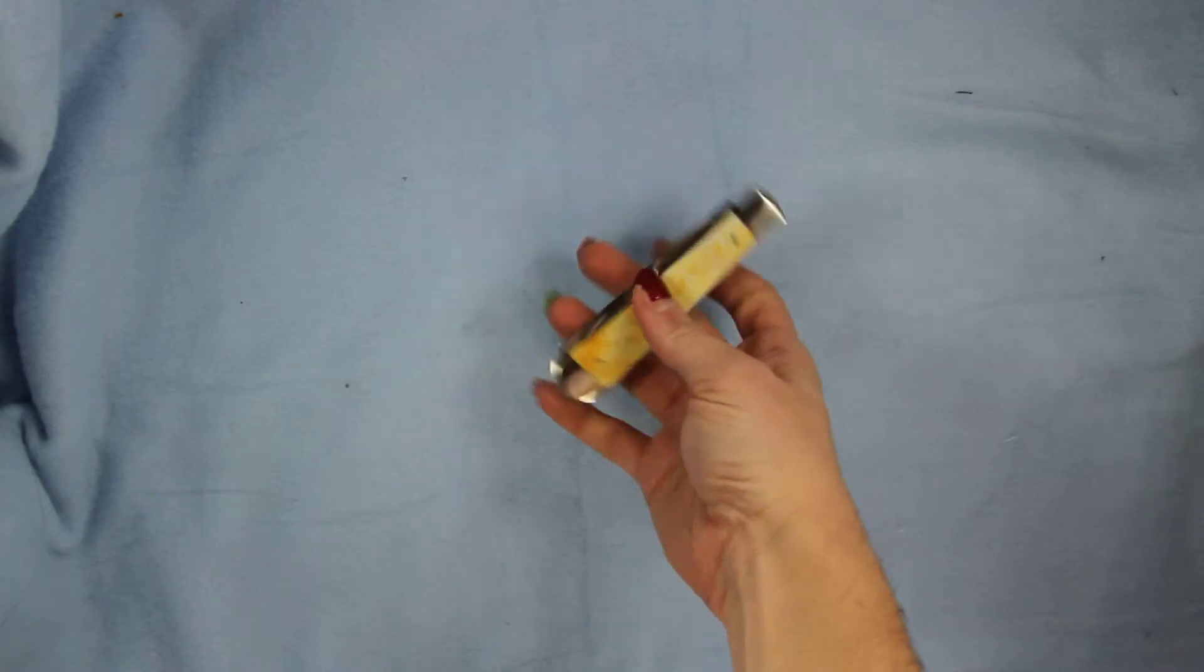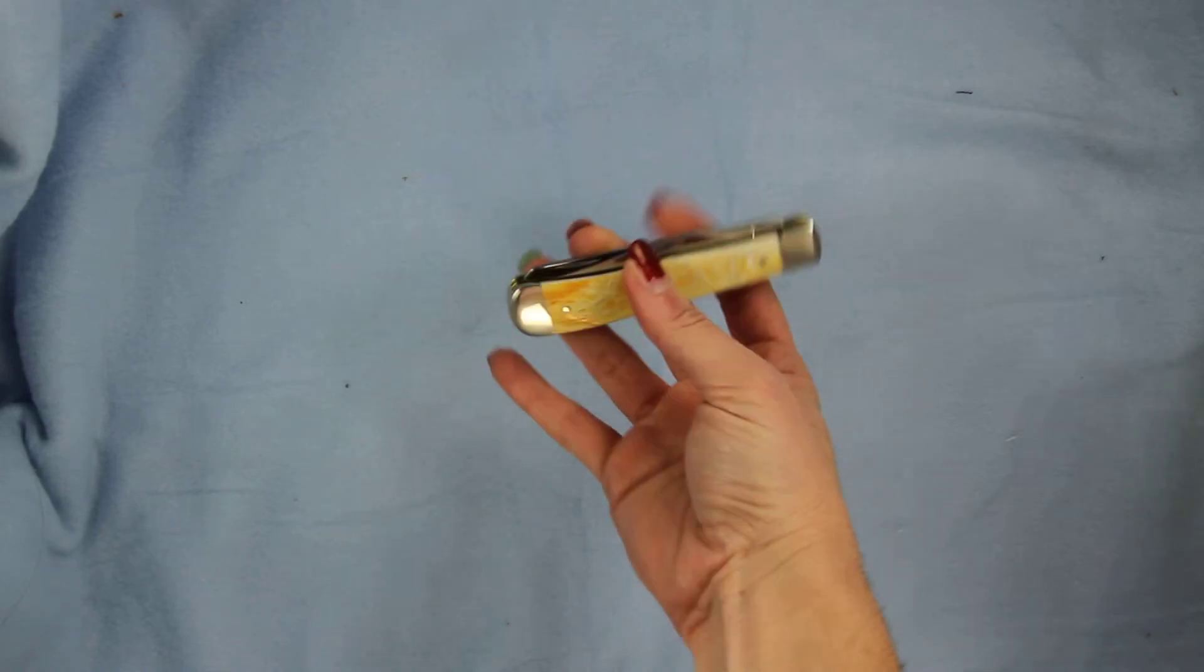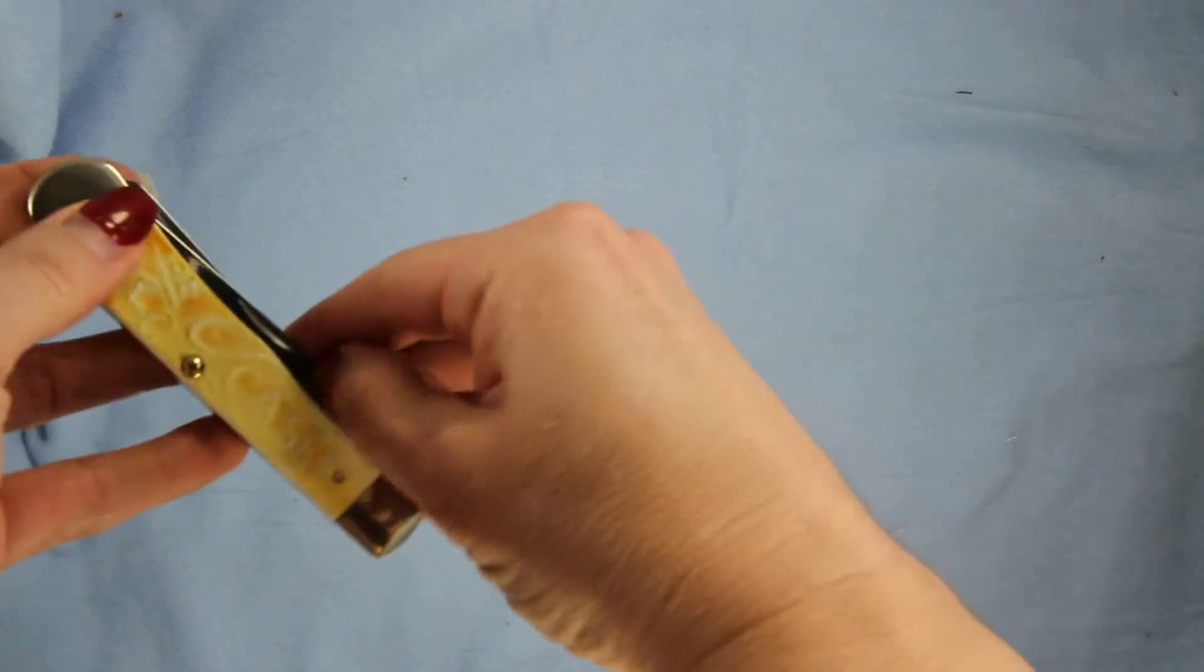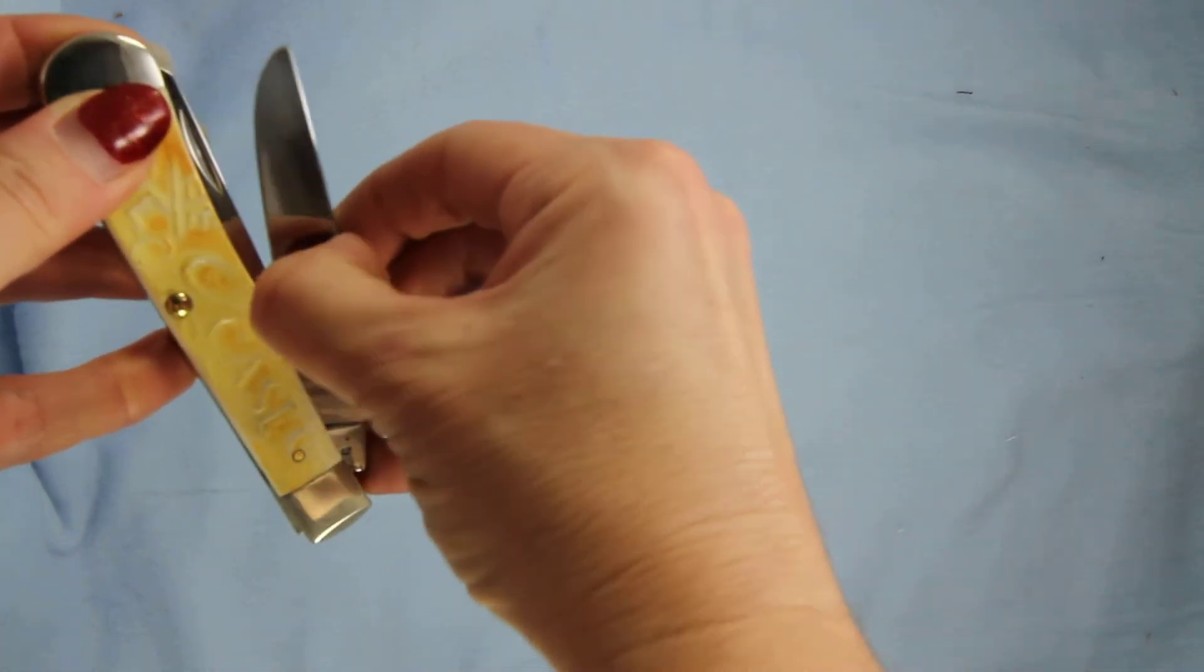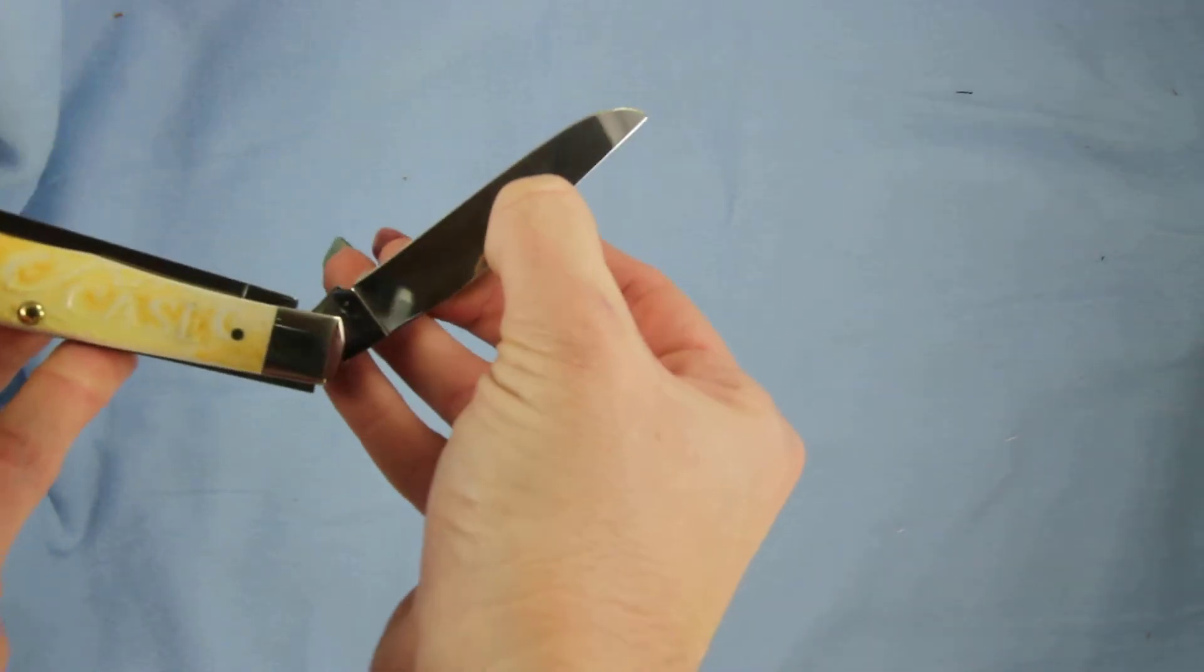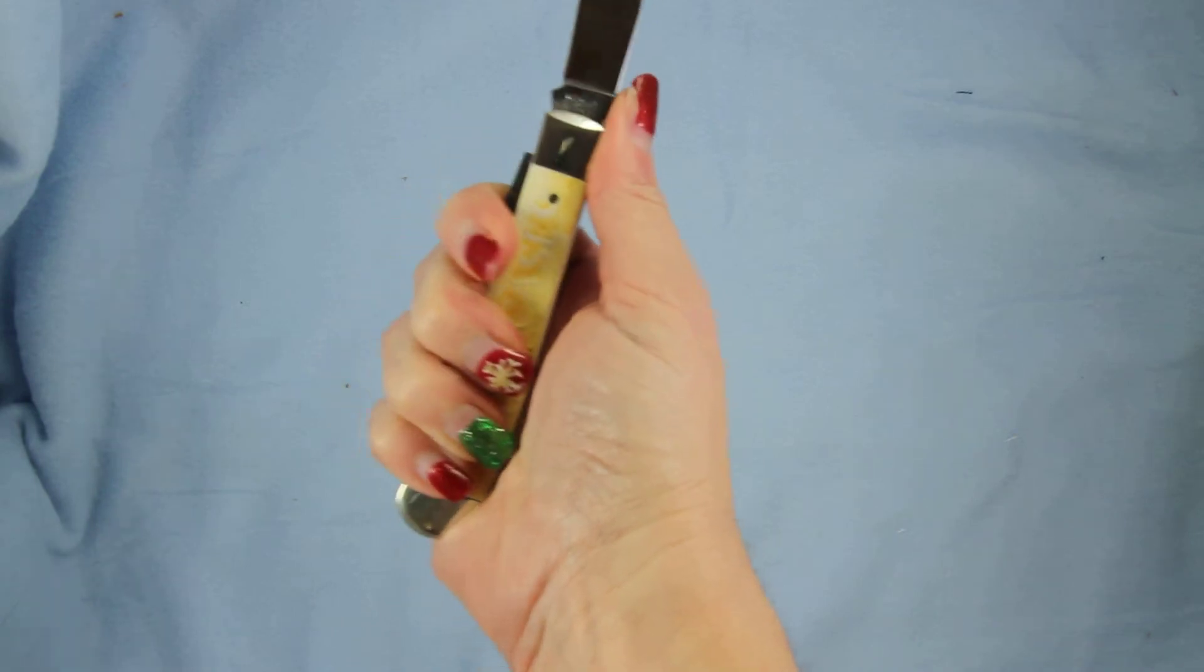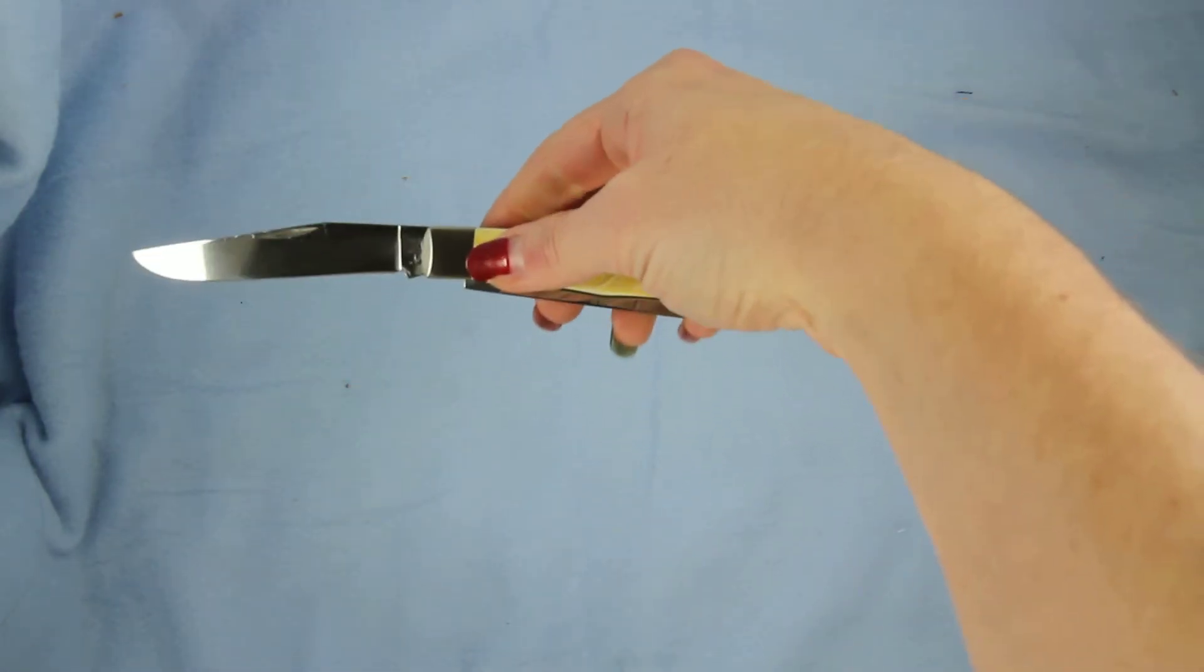The two silver bolsters on the end. Four and one-eighth inch when closed. Saw cut jigged pile side with the nickel silver bolsters weighing about four ounces. Proudly still made here in the USA.